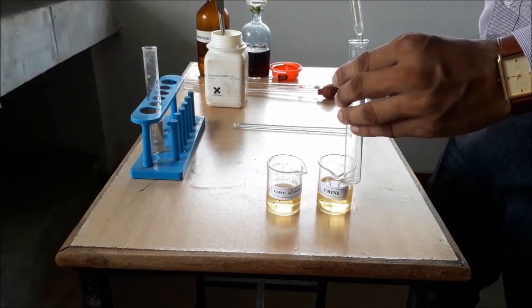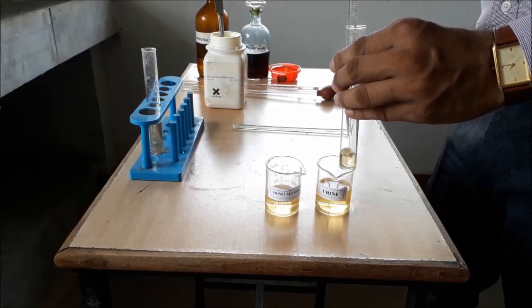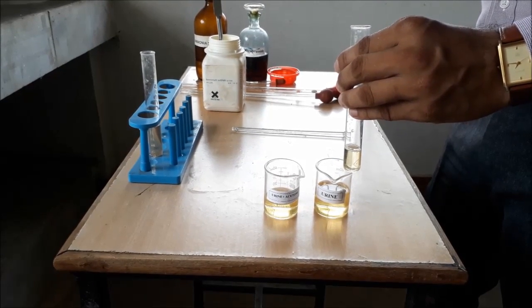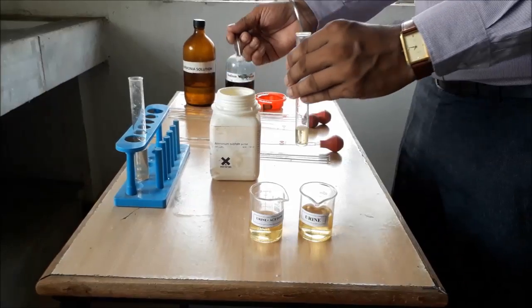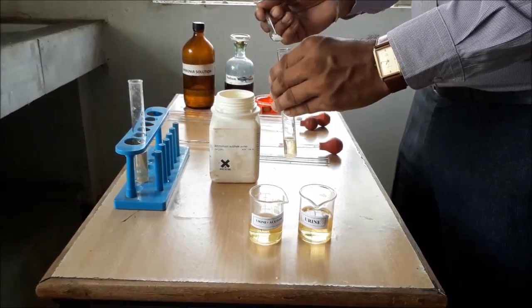Now, we are doing the same procedure with a given sample of urine. We do not have any positive sample of urine. Thus, we have added acetone with urine to mimic the presence of ketone bodies.